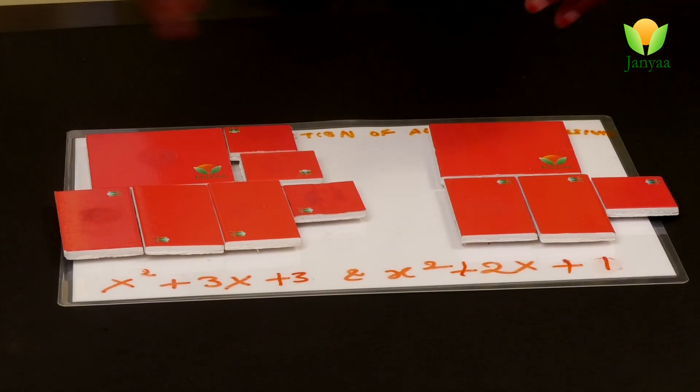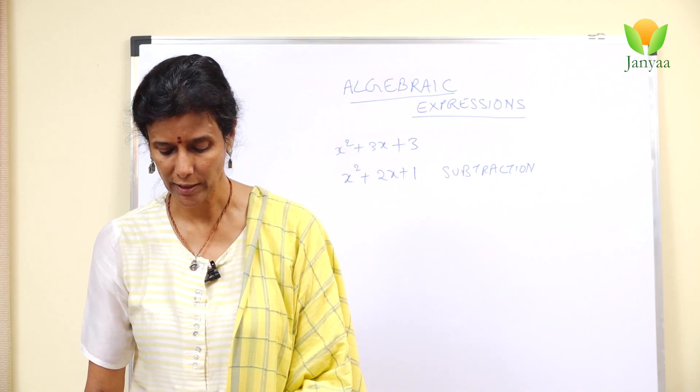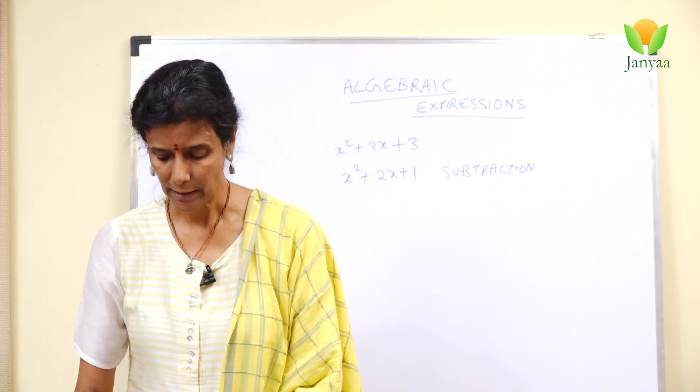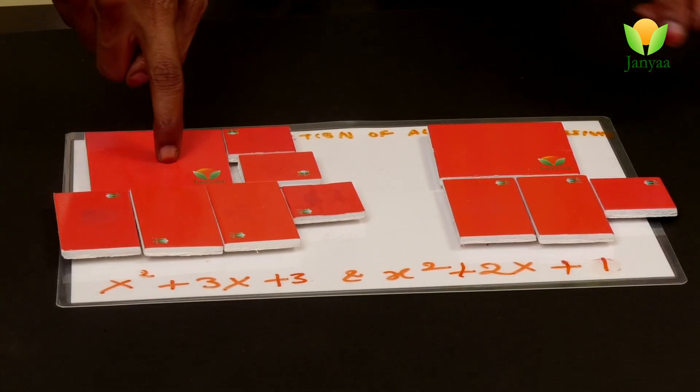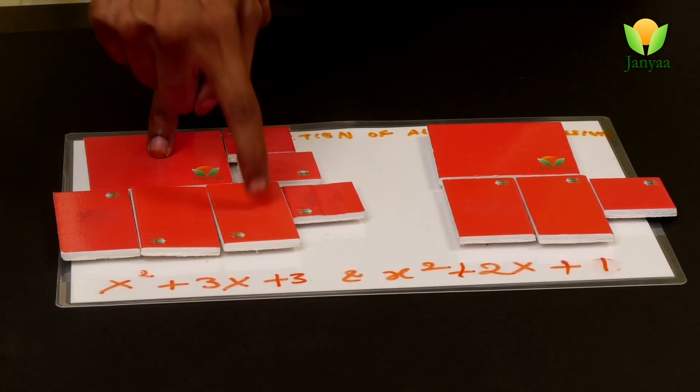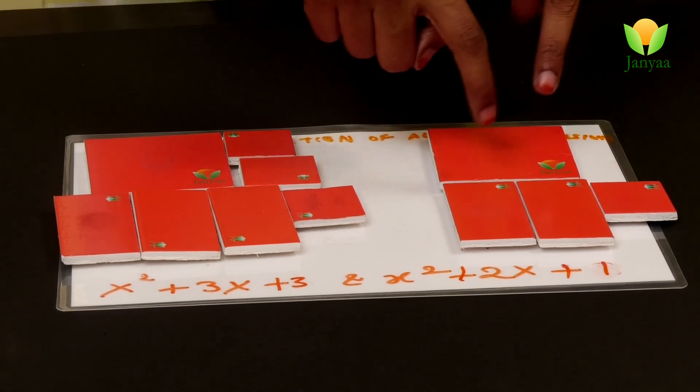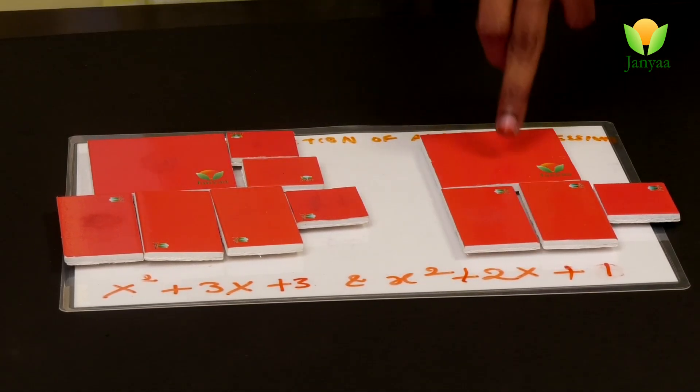As I mentioned before, we are using the tiles. You can refer to the previous video where I mentioned how these tiles work and what these tiles represent. X squared plus 3x plus 3, x squared plus 2x plus 1.